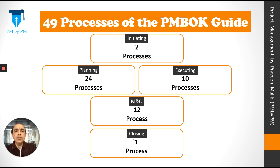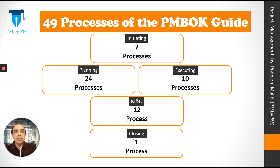These five different heads are called the five process groups of project management: initiating, planning, executing, monitoring and controlling, and closing. Under each process group there are many processes — two in initiating, 24 in planning, 10 in executing, 12 in monitoring and controlling, and closing has only one process.